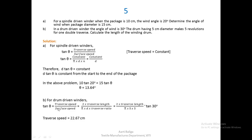For the drum-driven winder part: tan θ = 2 × traverse length / (π × d × traverse ratio). With drum diameter = 5 cm, traverse ratio = 5 revolutions per double traverse, and angle of wind = 30 degrees, we substitute and solve for traverse length. The traverse length is found to be 22.67 centimeters. Note: the formula variable represents traverse length, not traverse speed.